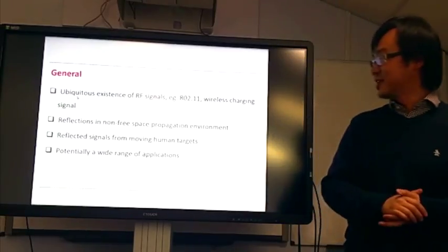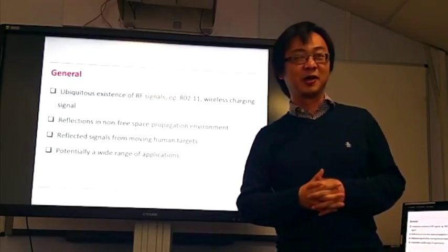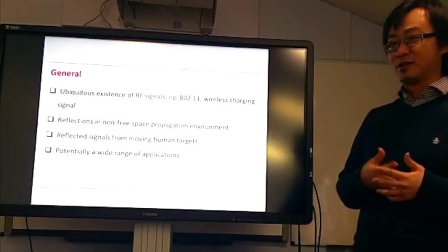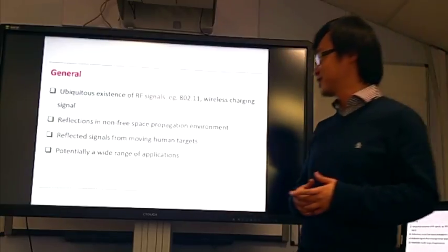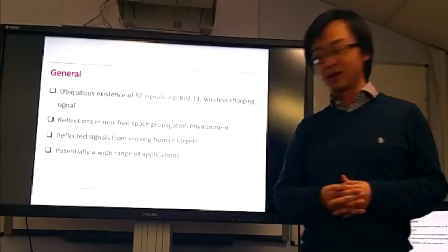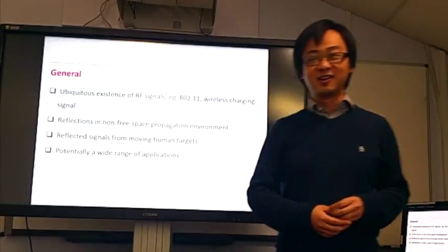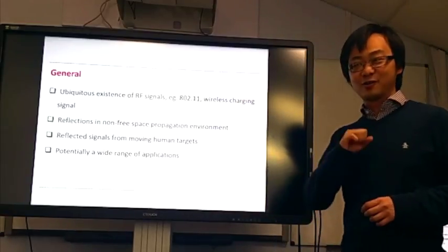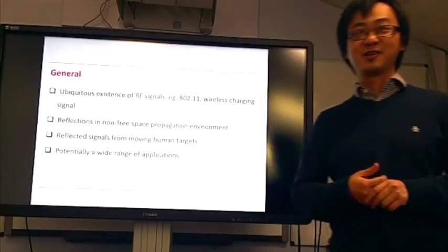Okay, this is the general background. First, we have the ubiquitous existence of RF signals in indoor scenarios now. We have WiFi, wireless charging signal, ZigBee, Bluetooth, lots of signals. Probably we can use these signals for something beyond communications. We have signals reflecting in non-free space propagation environments with lots of multipaths. We're looking at reflections from the human body, especially moving human body, even tiny movement caused by respiration. We think potentially we have a wide range of applications based on this detection.